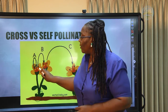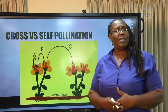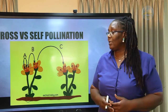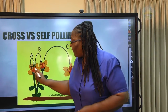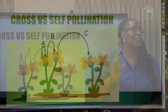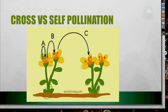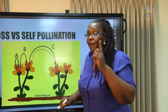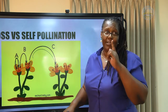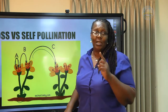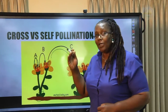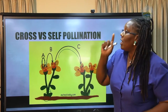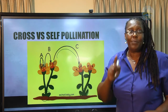In cross-pollination you are moving from the anther onto the stigma of another flower on a different plant. Even if two flowers are on the same plant, that is still self-pollination. For it to be cross-pollination, the pollen grain must leave the anther of one flower and land on the stigma of another flower on another tree of the same species.